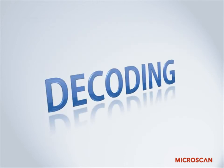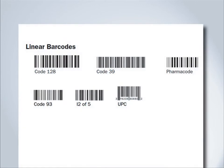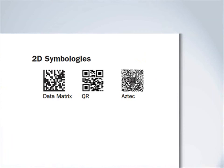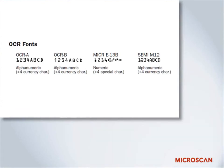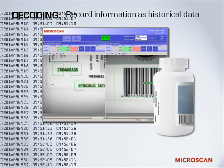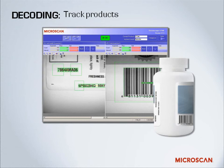Decoding refers to the decoding of 1D and 2D symbologies, such as linear barcodes, stacked symbologies, and 2D symbologies such as data matrix codes. This also refers to OCR, or optical character recognition, which is text that is simultaneously human and machine readable. Decoding is typically used to record information as historical data, so you have a record of parts that have gone through a process. You can track the path a part took through that process and use that data for immediate action — looking at the data and sorting based on what it says.